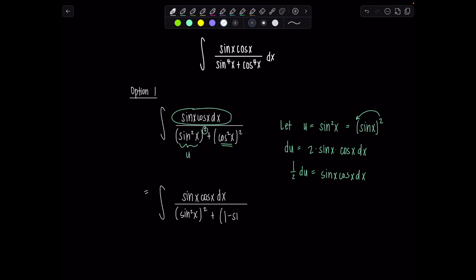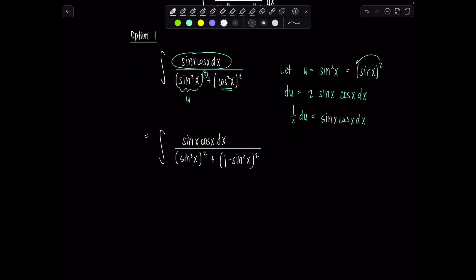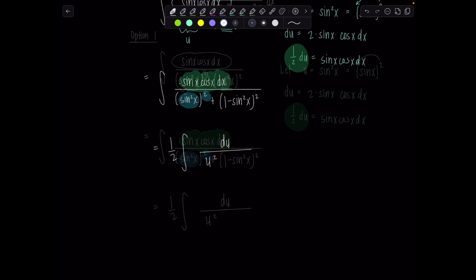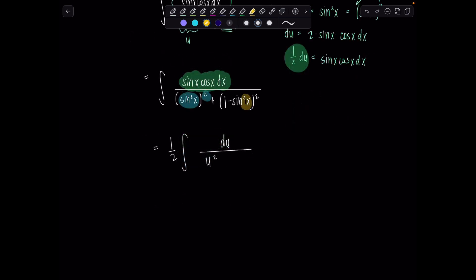So this is now one minus sine squared x squared. Are we ready? Yes, Professor V. Perfect. So all of this, sine x cosine x dx, that's one-half du. Let me put the one-half outside for right now, and then just du up here. Then we have sine squared squared, so that's just going to be u squared.